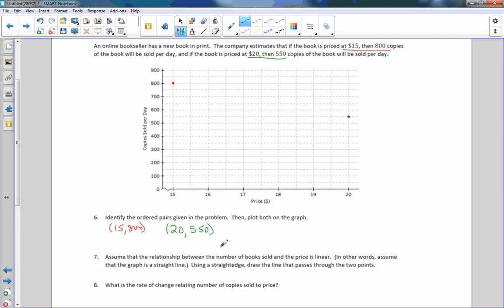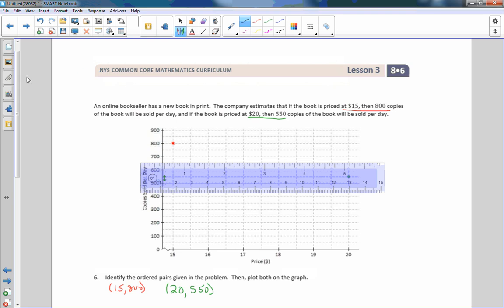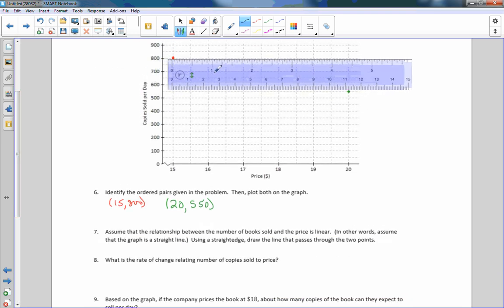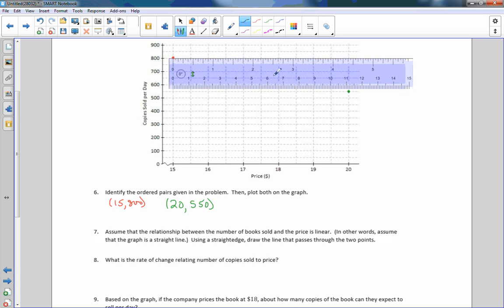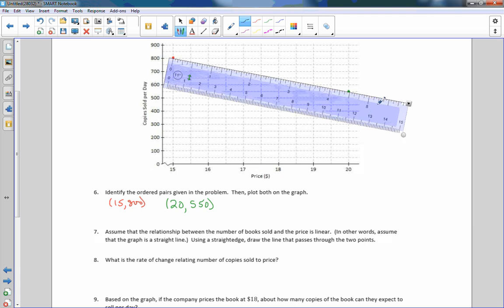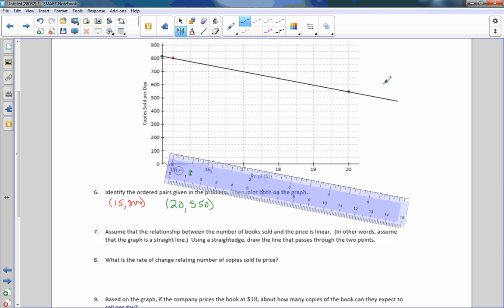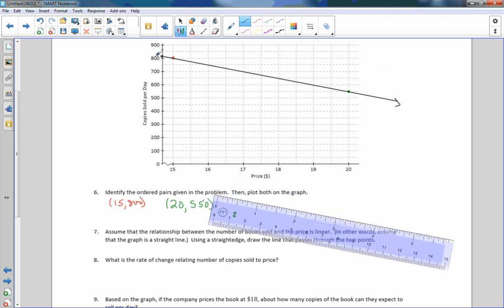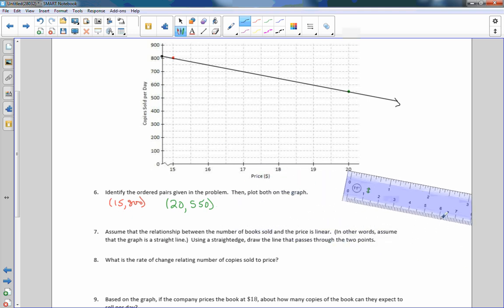Number 7 says assume that the relationship between the number of books sold and the price is linear. In other words, assume the graph is a straight line. Using a straight edge, draw a line that passes through these points. I'll get my ruler and rotate it so it runs through both points. Draw the line. I'm going to put a dot there. The reason I'm going to stop there and not continue with an arrow is because this is $0. Nobody's going to pay someone to take their book. We're not going to have negative dollars. So we're going to stop there. And it's decreasing. Sales decrease as the cost increases.